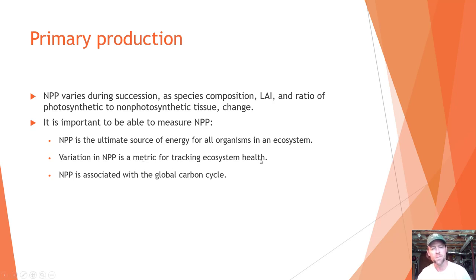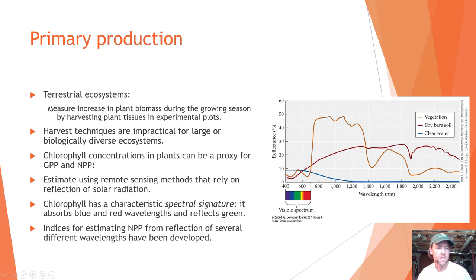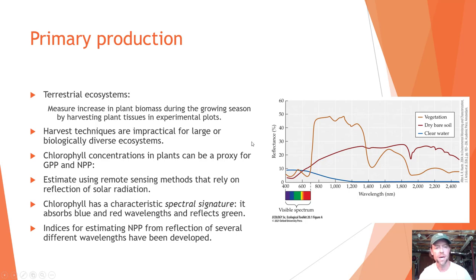In terrestrial ecosystems, NPP is measured by tracking the increase in plant biomass during the growing season by harvesting plant tissues in experimental plots. These experiments measure plant biomass alongside the amount of sunlight reaching the area, to calculate how much net primary production is occurring. However, harvest techniques are impractical for large or biologically diverse ecosystems — think about those 12 leaf layers in a tropical forest compared to a grassland, and how much harder it would be to estimate productivity.